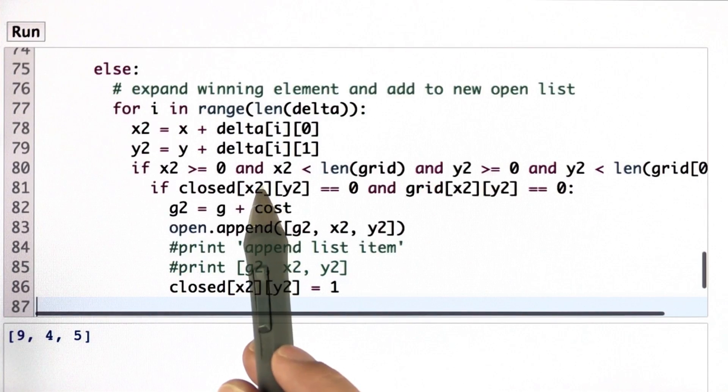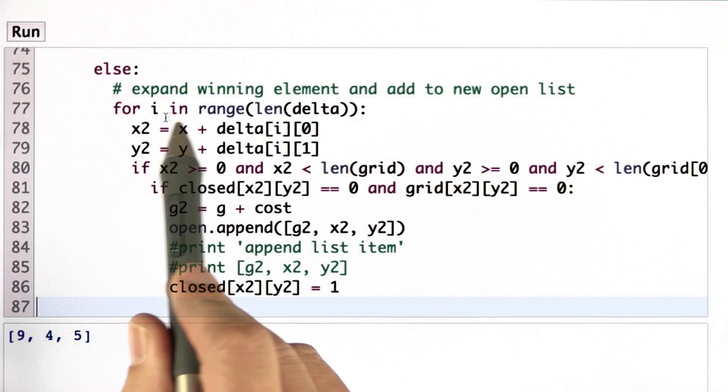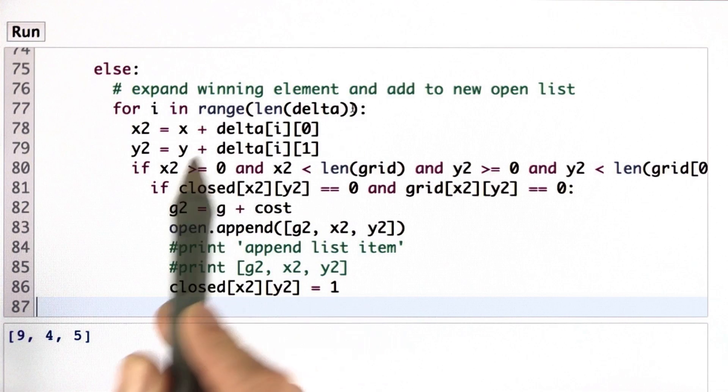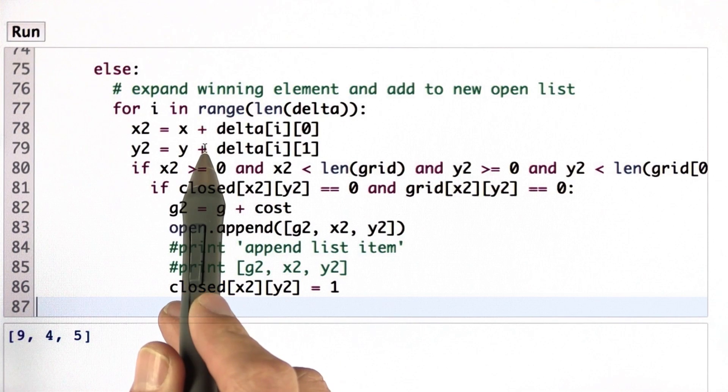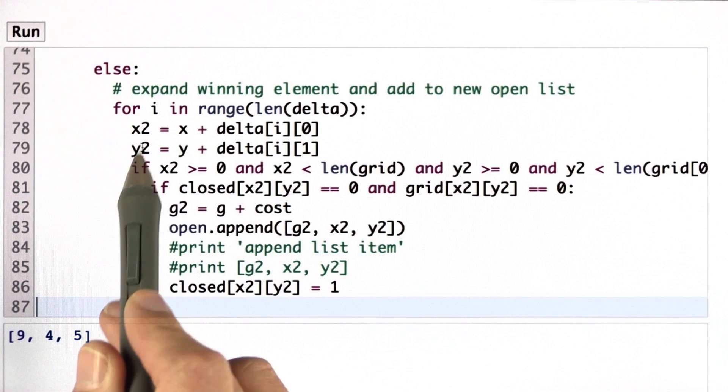Now, if I'm not done yet, then here's the interesting case. And that's the meat of what I'm programming. I'm going through all the possible actions. There's four of them. Delta is an array of four different actions. I apply the action to x and y with this addition over here by applying the corresponding delta vector to construct x2 and y2.